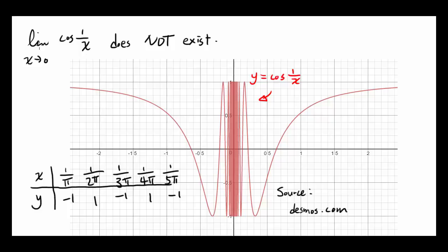In this video, I want to show you that the limit as x approaches 0 of cosine of 1 over x does not exist. And this is a graph of y equals cosine of 1 over x from Desmos.com.